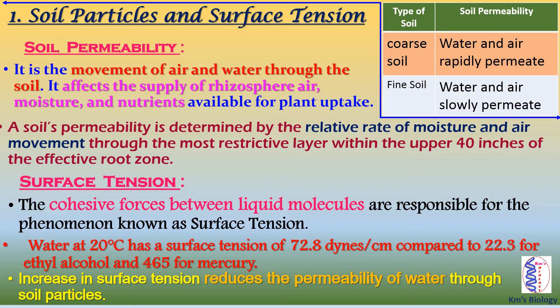Soil permeability is another important parameter of the first factor, soil particles and surface tension. It is the movement of air and water through the soil, and it affects the supply of rhizosphere air, moisture, and nutrients available for plant uptake. A soil's permeability is determined by the relative rate of moisture and air movement through the most restrictive layer within the upper 40 inches of the effective root zone. In coarse soil, water and air rapidly permeate; in fine soil, water and air slowly permeate.